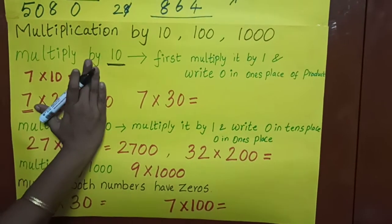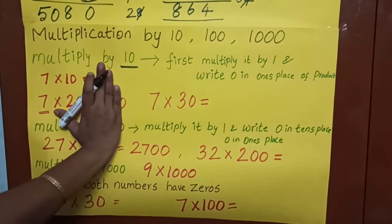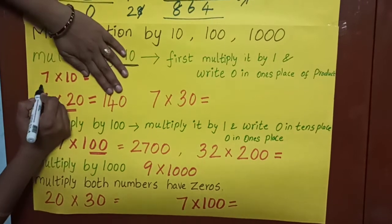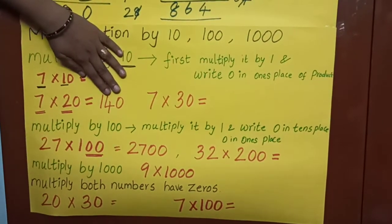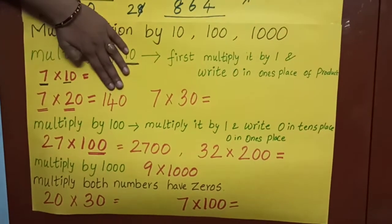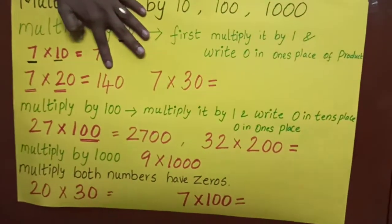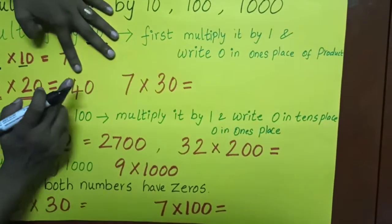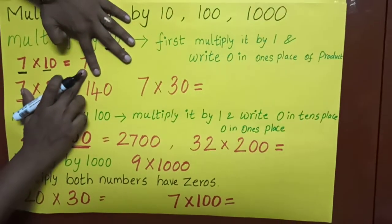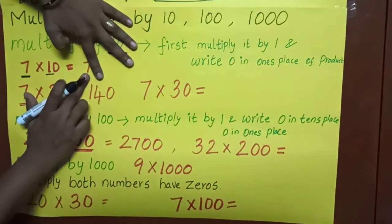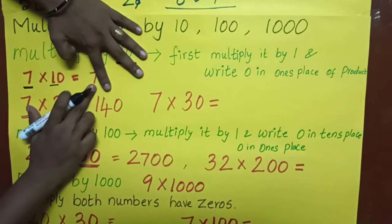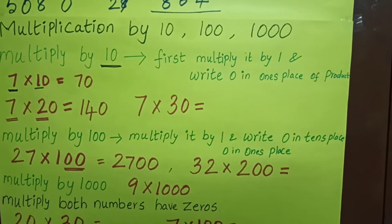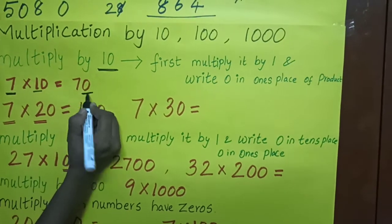See here, the question is 7 into 10. The step is 7 into 1 — 7 ones are 7. So I have written 7. The next procedure: write zero in the one's place. This is the one's place. So here: 1, 0. In the one's place, I have to put 0.